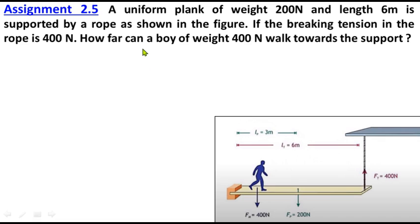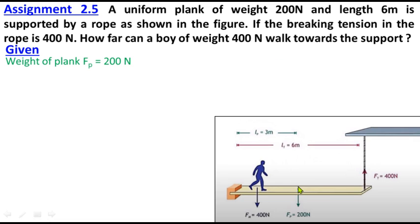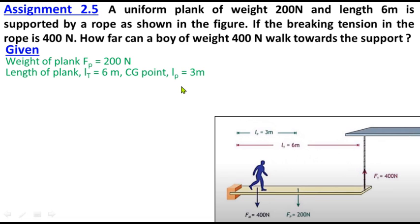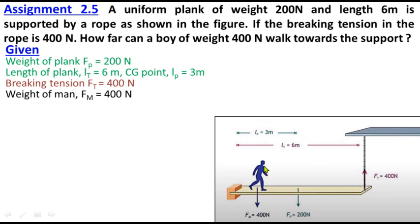How far can a body of weight 400 newton walk towards the support? Given: weight of plank Fp = 200 newton, length of plank Lt = 6 meter, CG point Lp = 3 meter, breaking tension = 400 newton, weight of man Fm = 400 newton. We need to find the maximum distance D.